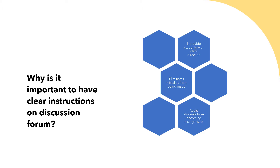Clear instructions limit students from making simple mistakes because if everything is outlined and articulated clearly, mistakes will not be made when you receive responses. It also causes students not to become disorganized. When students don't have clear instructions, their minds and their writing become very disorganized. So it's important to have an organized structure when giving clear instructions for discussion forums.